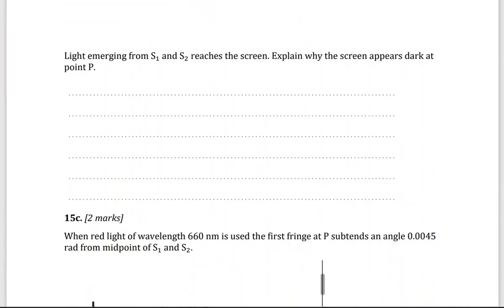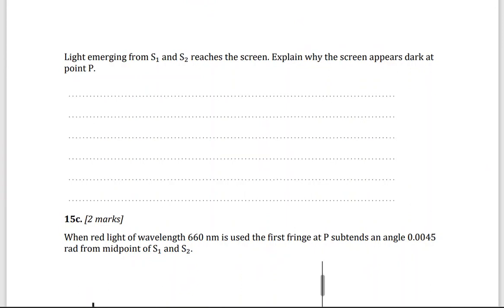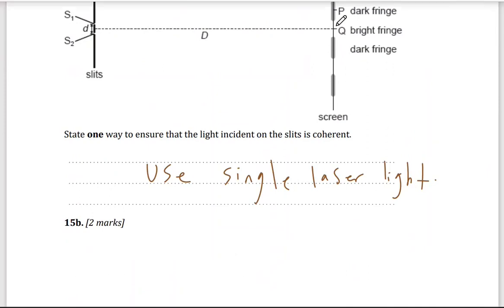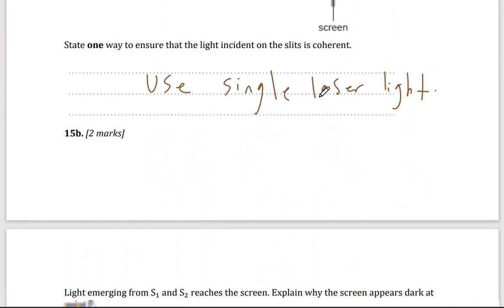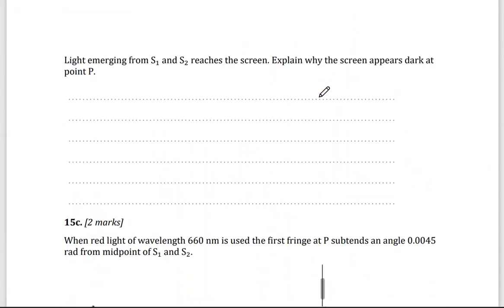Light emerges from S1 and S2, reach the screen. Explain why the screen appears dark at point P, dark, because we will have a destructive interference. When light interferes with each other, they interfere constructively, where we get bright fringes, or destructively, when we get destructive, dark.